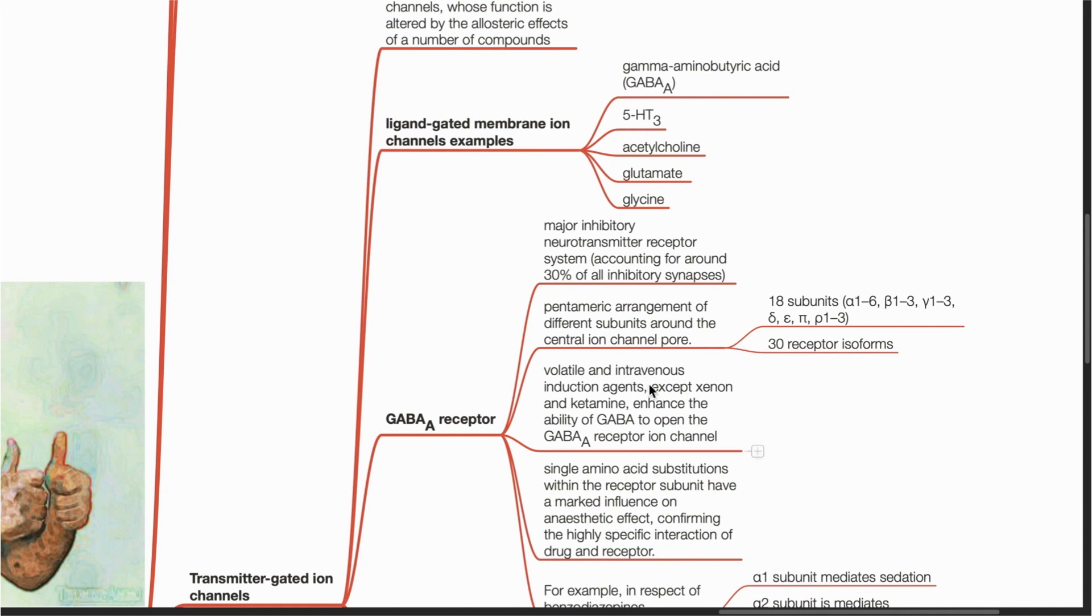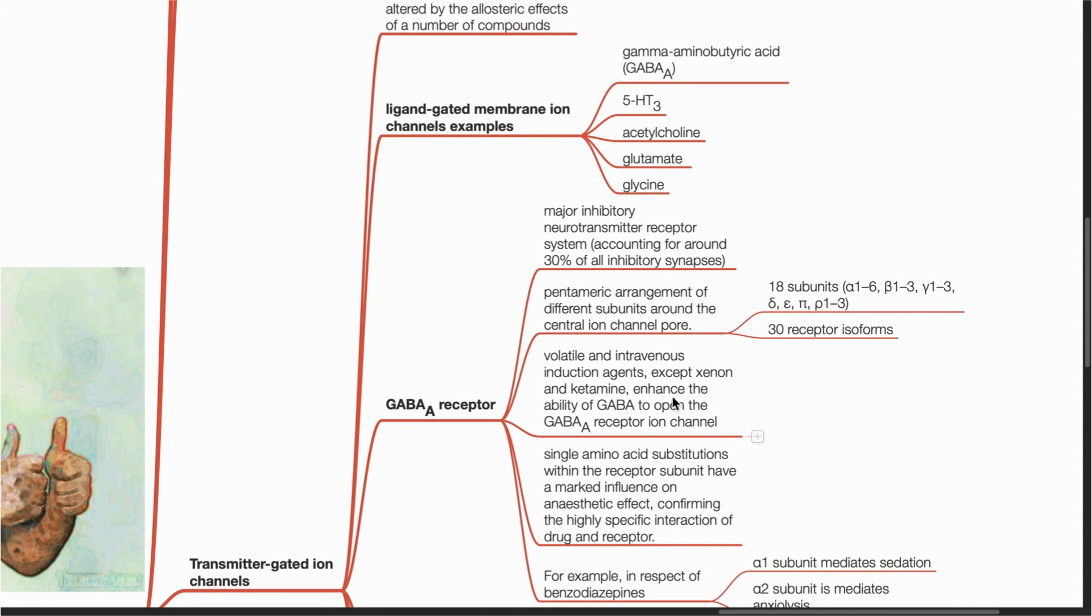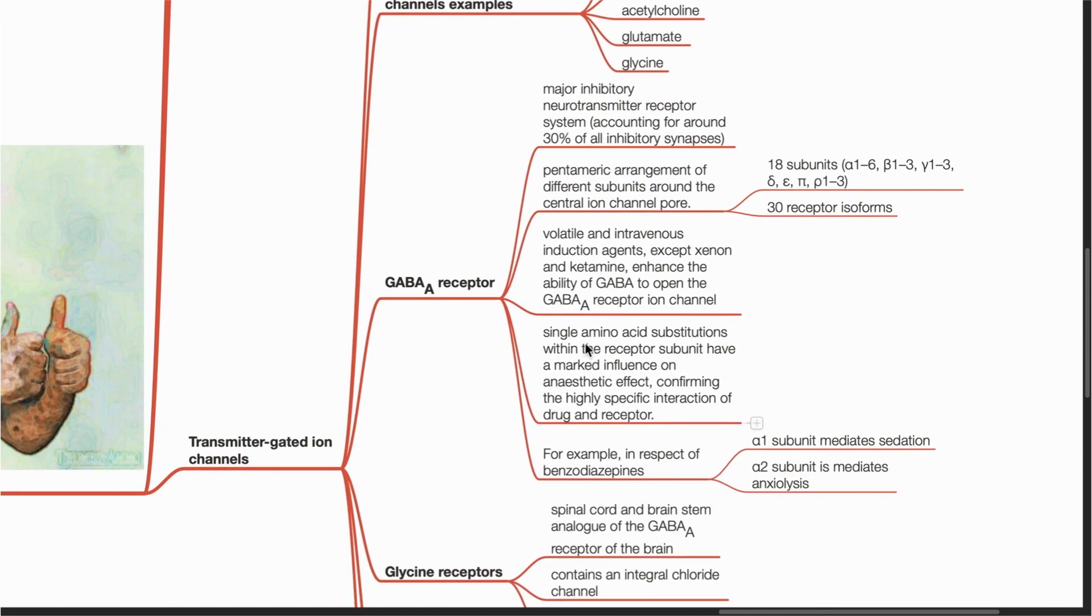Volatile and intravenous induction agents, except for xenon and ketamine, enhance the ability of GABA to open the GABA-A receptor ion channels. Single amino acid substitutions within the receptor subunit have a marked influence on the anesthetic effect, confirming the highly specific interaction of drug and receptor.